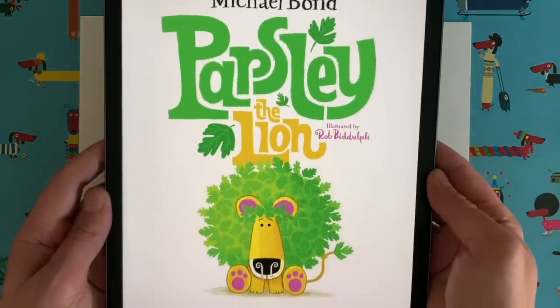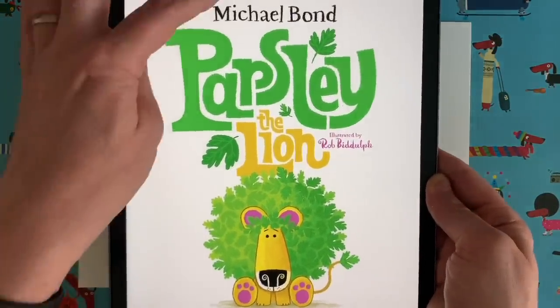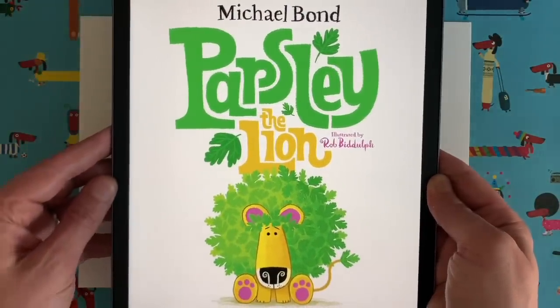Now, would you like to see my drawing of Parsley the Lion? I can't show you the actual book because you know what? I haven't even finished drawing the book yet, but I can show you the character. Would you like to see? Here we go. Wow. There we go. Parsley the Lion. Look at that. Michael Bond and Rob Biddulph on the same page. What an honour.